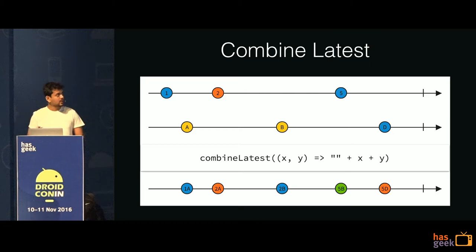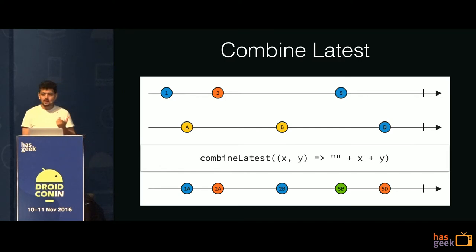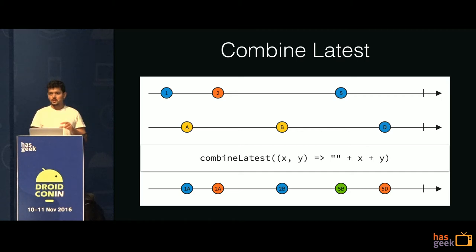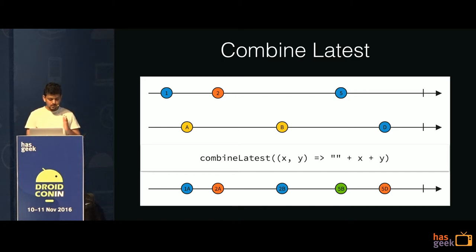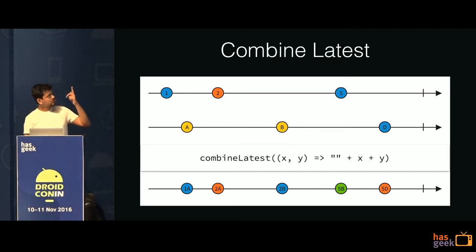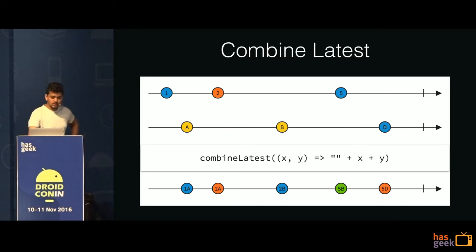Let's see another example — this is a diagram of the combineLatest operator. combineLatest has multiple inputs — two lines at the top and a single line at the bottom. It combines the latest value from each of the inputs into a single value in the output based on a function you provide. Here the function is concatenating the two inputs. Whenever either of the two inputs changes, we have a new value in the output which concatenates the latest value. For example, when the upper value changes from 1 to 2, the previous last value of the second input is 'a', so 'a' is combined with 2 and we get '2a'. These two operators are enough for our use case.